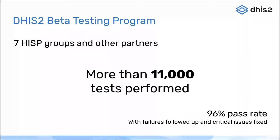We had a 96% pass rate, meaning that of all those tests performed, 96% passed the first time. For those that didn't pass, we followed up — either fixing issues already in 40.0.0, scheduling fixes for the first patch release, or noting them as known issues to address in the future. Big thanks to Phil, who has been leading this on the DHIS2 core team, and to all the HISP groups and partners who put time in to help make DHIS2 version 40 a very high quality release.